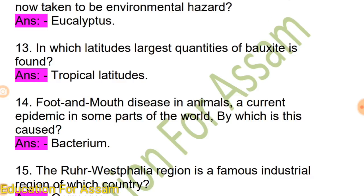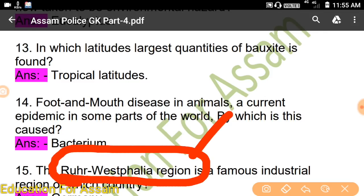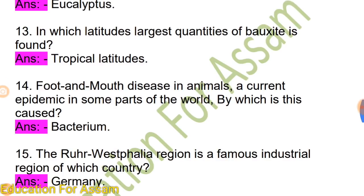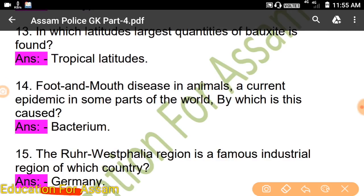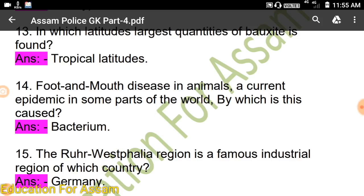The Ruhr-Westphalia region is the famous industrial region of which country? This answer is very important — the answer is Germany. Ruhr-Westphalia region — remember this answer, it is very important.